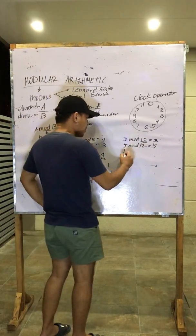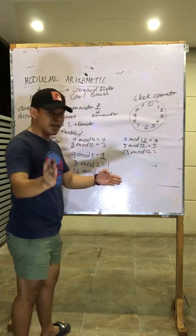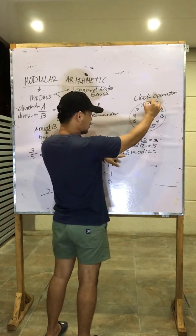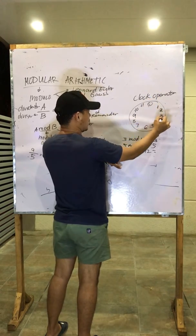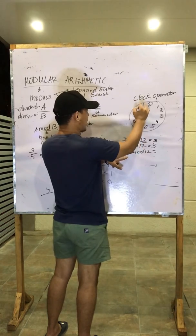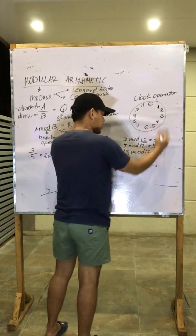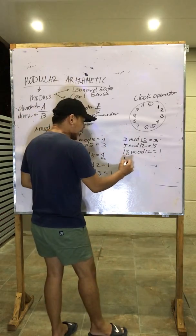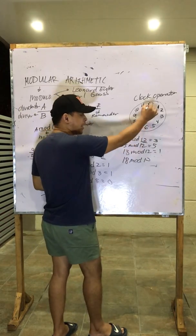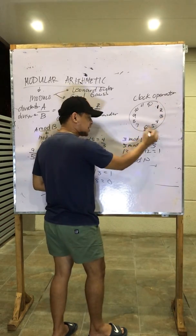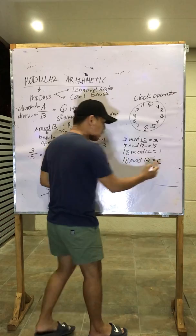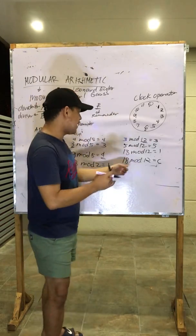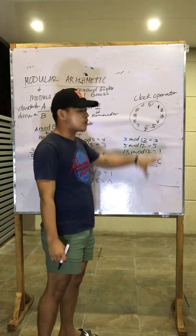For 13 mod 12, counting on the clock operator: 1, 2, 3, 4, 5, 6, 7, 8, 9, 10, 11, 12, 13 — the result is 1. Using division: 13 divided by 12 is 1 remainder 1. For 18 mod 12, counting: 12, 13, 14, 15, 16, 17, 18 — the result is 6. Because 18 minus 12 leaves 6, or 18 divided by 12 is 1 remainder 6.